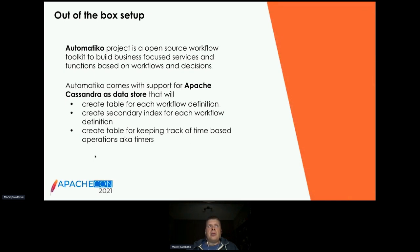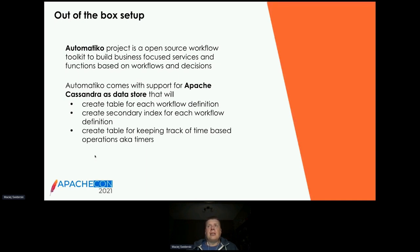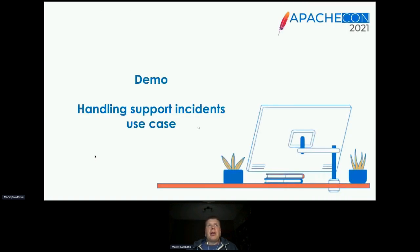Now let's explore an implementation. The Automatico project is an open source workflow toolkit for building business-focused services and functions, and I'll use it for today's demonstration. Automatico comes with Apache Cassandra support as the primary data store, providing the basics out of the box — though some tuning may be required. It will create a table for each workflow definition, create secondary indexes if required for execution, and create a table for tracking time-based operations (timers), which are also persisted in Cassandra.